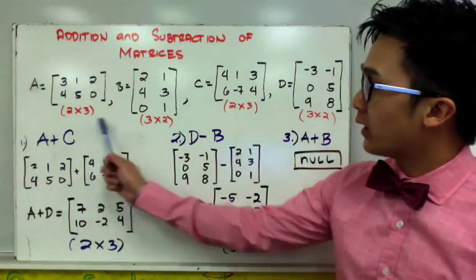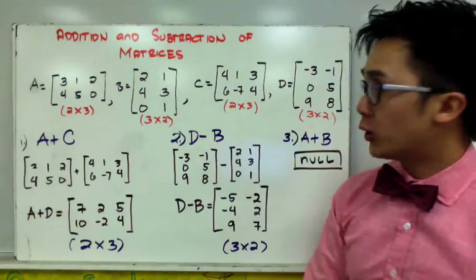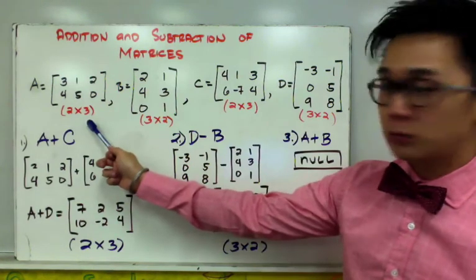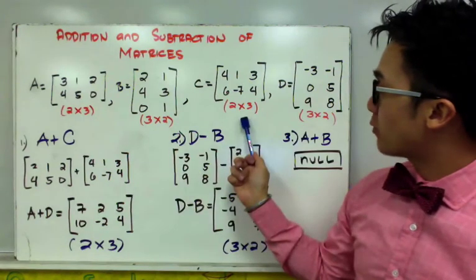So we have here four given matrices: matrix A, B, C, and D, with different orders. For matrix A, we have a 2 by 3 matrix. For matrix B, we have a 3 by 2 matrix. C is a 2 by 3, and D is another 3 by 2.